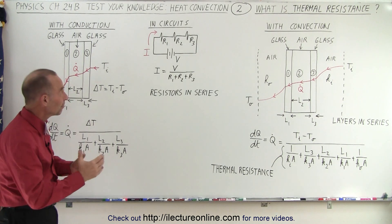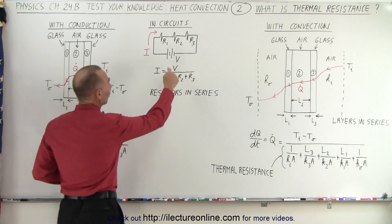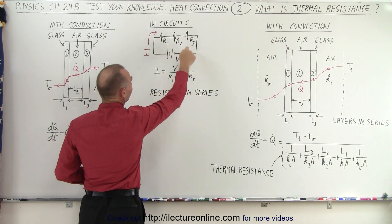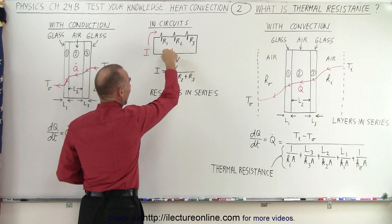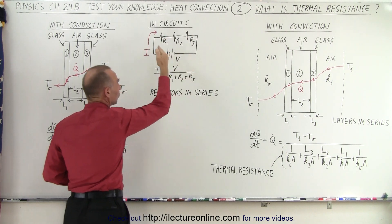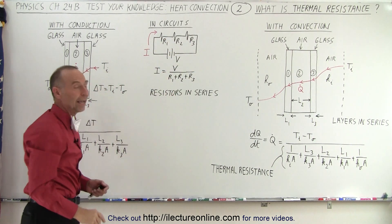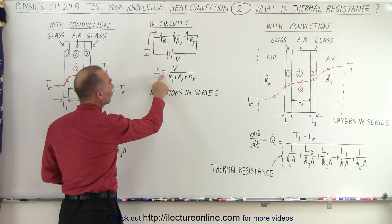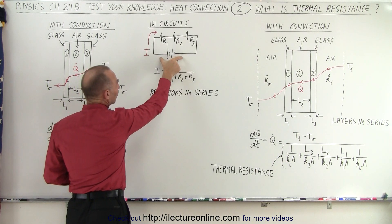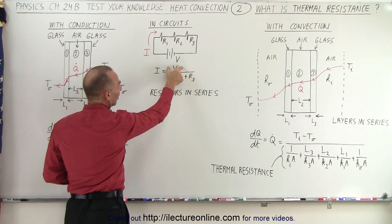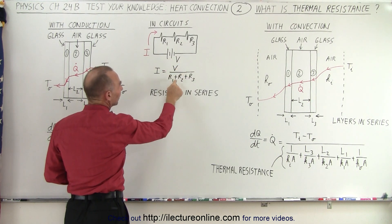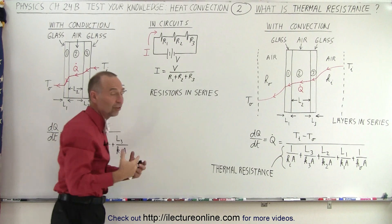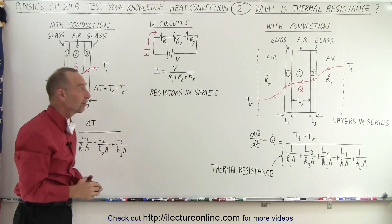Some of us may be familiar with simple electrical circuits, where we have resistors in series, and a battery which is driving current through the circuit. Notice that the current in the circuit is equal to the ratio of what drives the current — in this case the voltage — divided by the sum of all the resistances, because the resistors are in series.